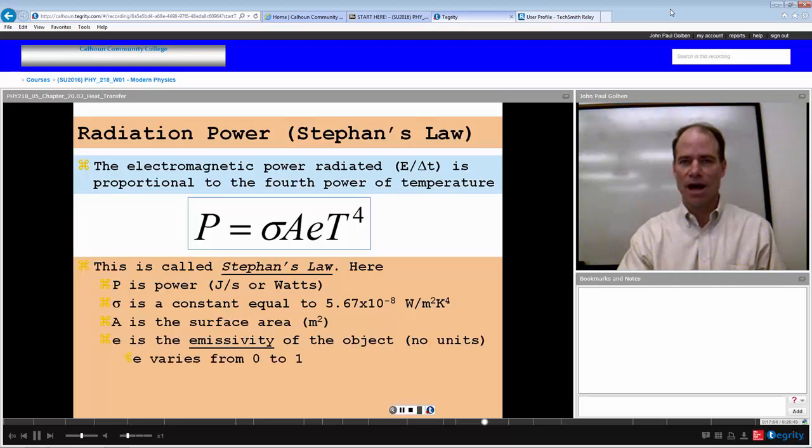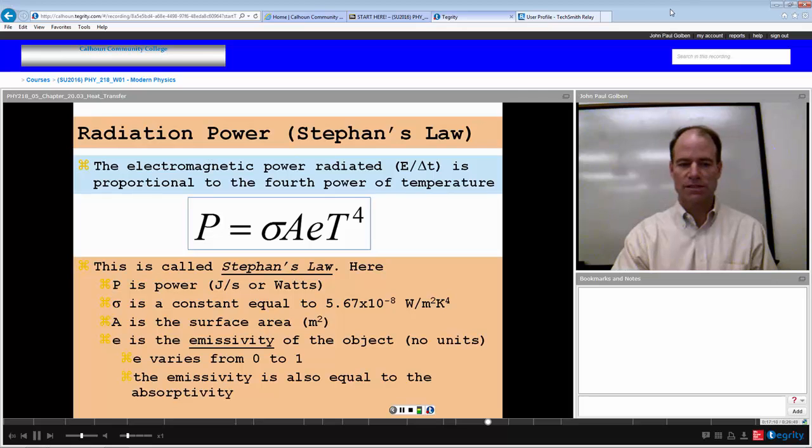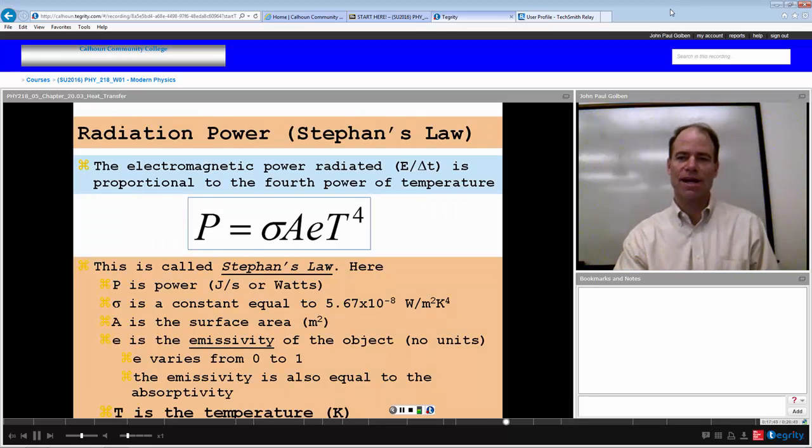A is the surface area in meter squared. E is the emissivity of the object. It varies from 0 to 1 as a fraction. The emissivity is also equal to the absorptivity of the object. So how much it emits is also the rate at which it can absorb. The number is the same. If you're absorbing at different temperatures then that would be a different power. So you have to consider that maybe your surrounding is a different temperature than you are and hence your power exchange would be different. But if you're at the same temperature as your surroundings then you have no power difference. Your emissivity and your absorptivity are the same. And T is the temperature in Kelvin. You have to make sure when you use this law that you are using the Kelvin scale.